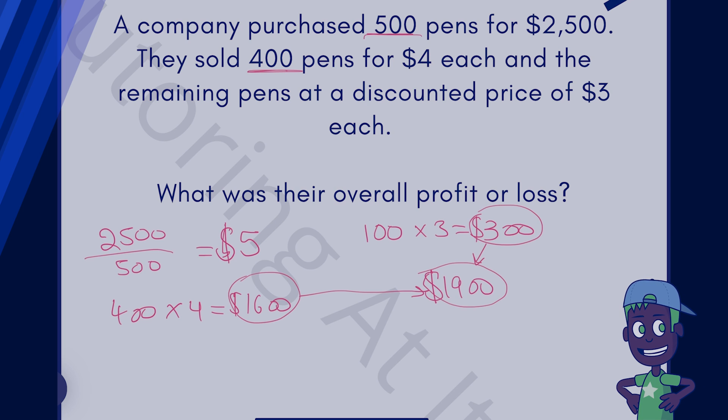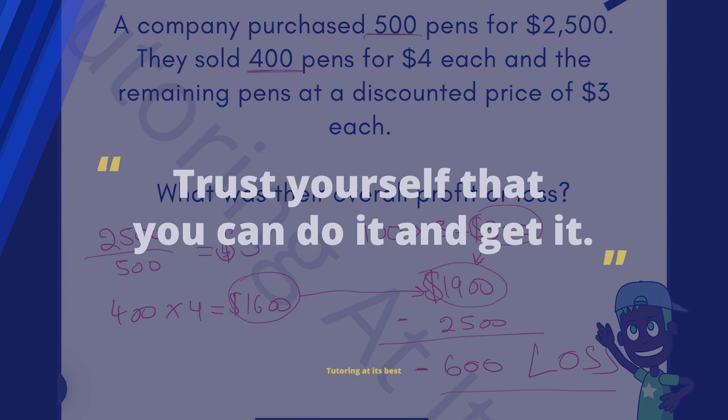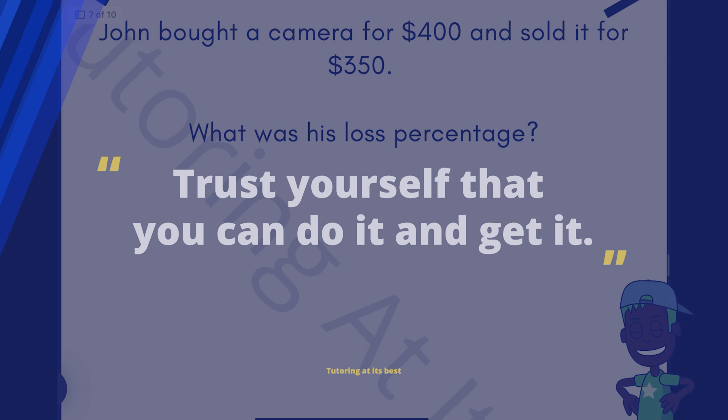And now, to calculate the overall profit or loss, all we will do is simply take $1,900 and subtract the cost, which is $2,500, and we're left with a minus of $600. So that is the overall loss that they have incurred. Beautiful work. Let's go for the next question.